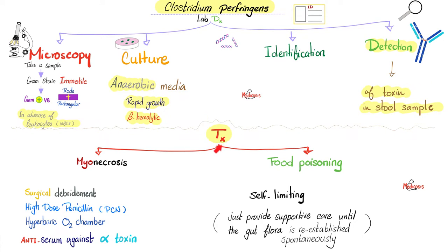How can I manage it? It depends on the disease. If it's myonecrosis or gas gangrene, you need surgical debridement — there is no question about it. High-dose penicillin helps. A hyperbaric oxygen chamber might help, though the results are inconclusive — some doctors recommend it, others do not. The anti-serum against alpha-toxin was a great hypothesis in the past, but nowadays it's rarely used and not particularly effective. If the disease is food poisoning, that's a totally different story — it's a self-limiting disease, so just provide supportive care until the gut flora re-establishes itself spontaneously.